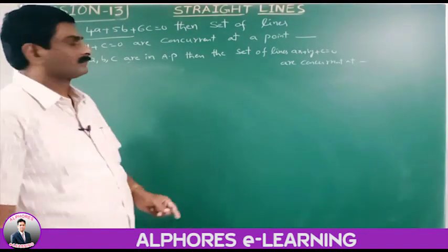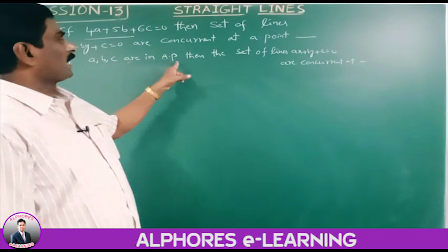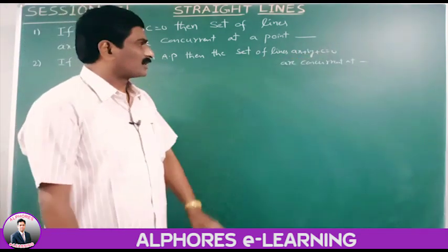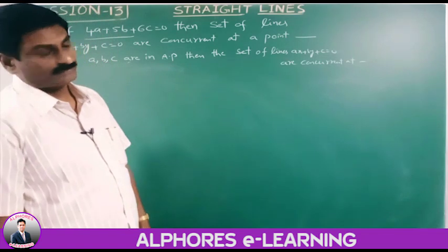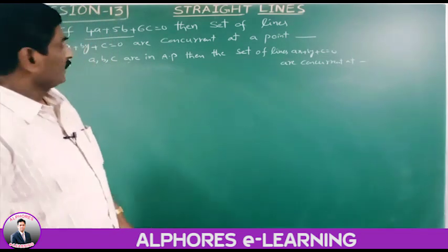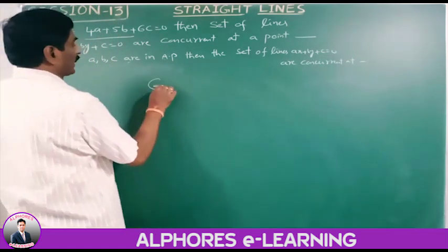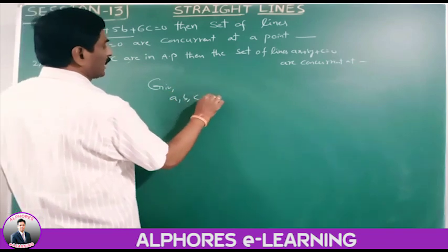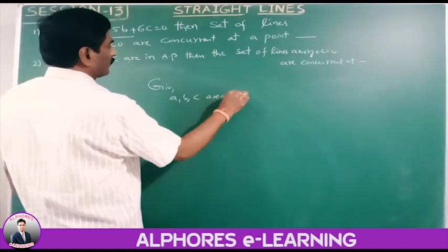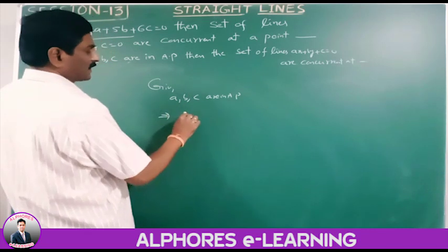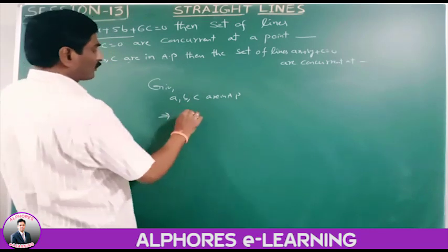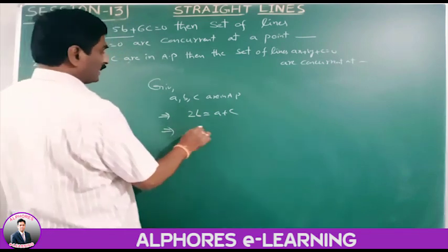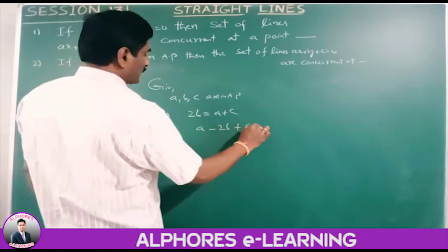Second problem: if a, b, c are in AP, then the set of lines ax plus by plus c equals 0 are concurrent at a point. Given that a, b, c are in AP, we have b equals (a+c)/2, so 2b equals a plus c, giving a minus 2b plus c equals 0.